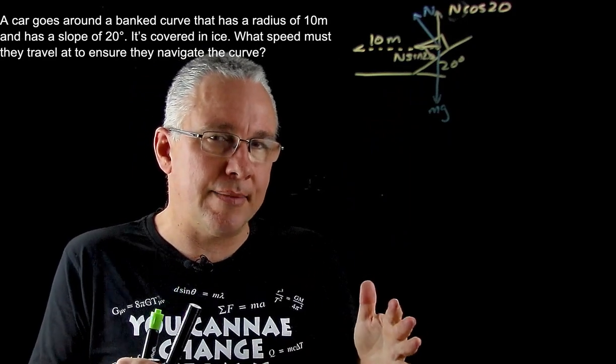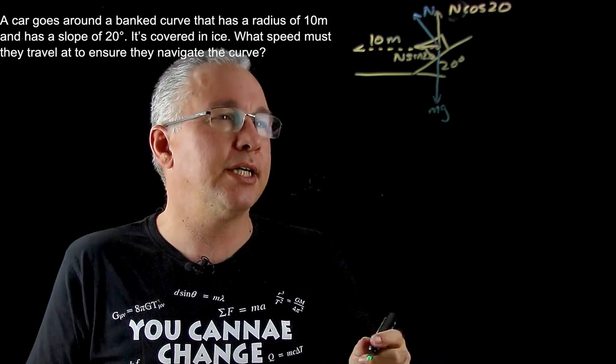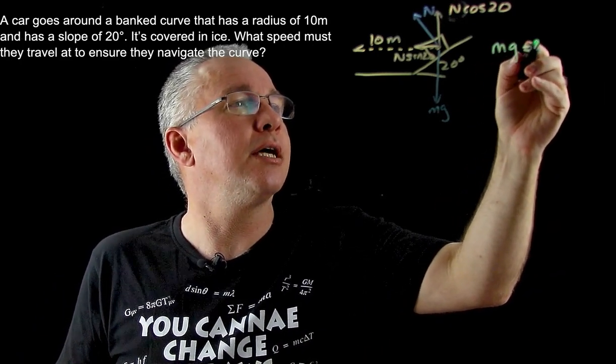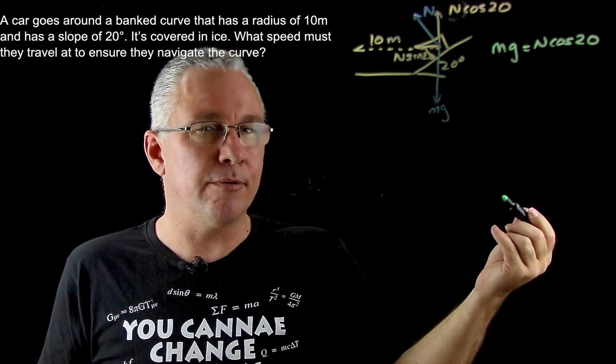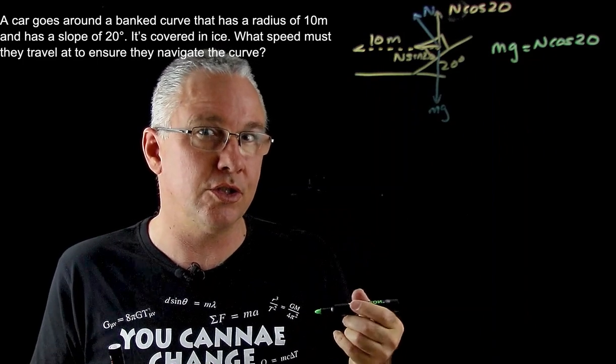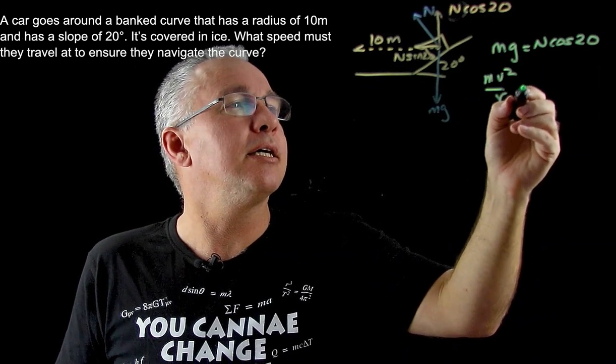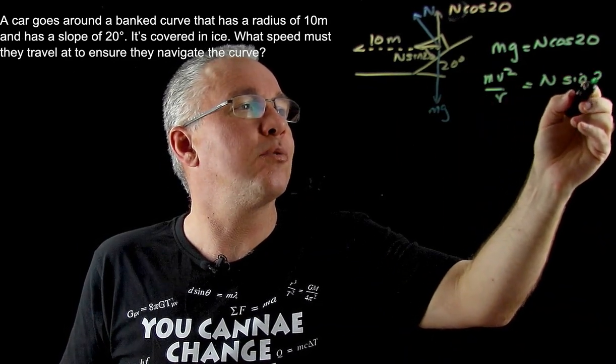Now let's examine this from that vector perspective. If we put the verticals together we'll see that mg is equal to n cosine 20. If we look at it from a horizontal perspective, this vector is the vector that's contributing to the centripetal force, so what we have is mv squared over r is equal to in this case n sine 20.